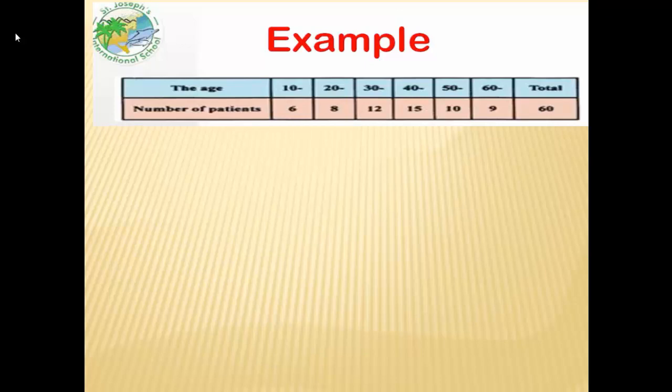How we can represent this number in a frequency curve. For example, if we have this table between the age and the number of patients: from 10 to 20 we have 6, from 20 to 30 we have 8 patients, from 30 to 40 we have 12 patients, from 40 to 50 we have 15 patients, from 50 to 60 we have 10 patients, from 60 and more we have 9 patients. Then the total number of patients equals 60.